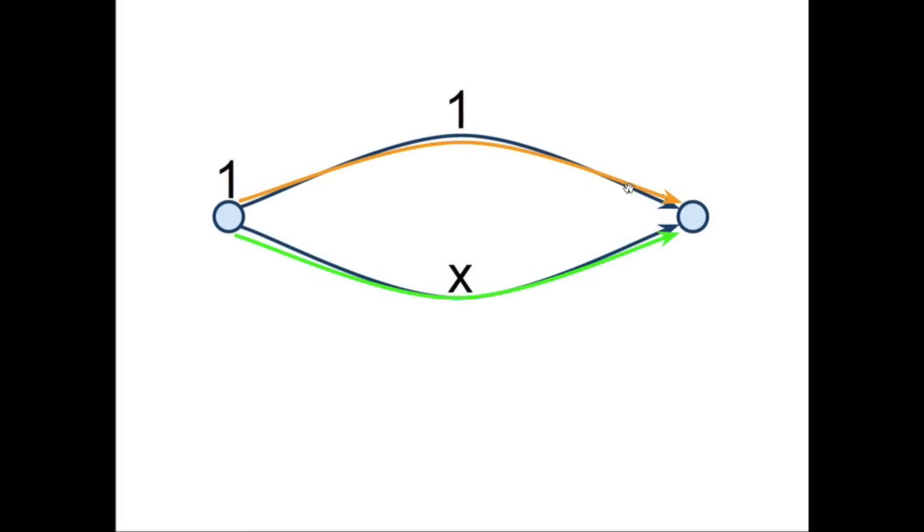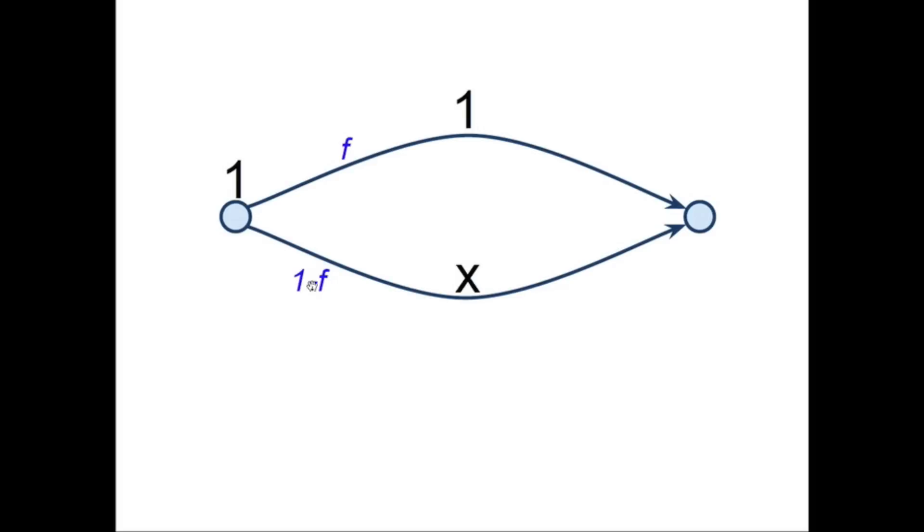So, to study this, we've got these flows. They can go one of two ways. And when we talk about flow, we're going to use the letter F to denote the quantity of traffic that goes this way. And if we know that F traffic goes this way, then that means that 1 minus F traffic must go this way because the entire traffic must add up to 1.